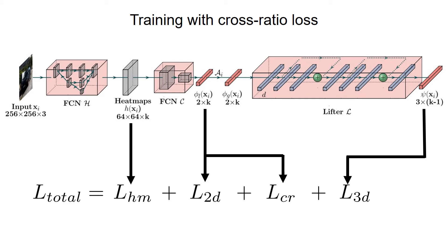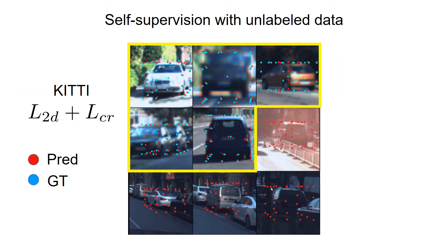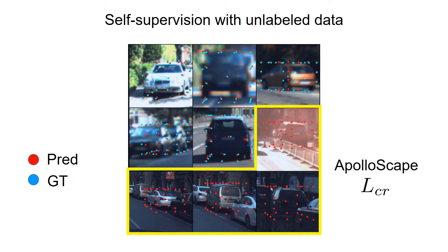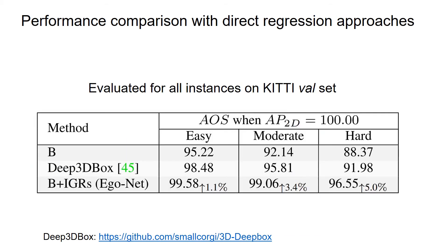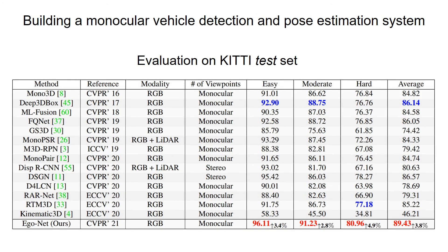Evaluating this loss function does not need any label and is agnostic to camera parameters. We not only use labeled data to learn the IGRs, but also show it's possible to use unlabeled data captured with different cameras to supervise the IGRs, which leads to better representation learning. We compare EgoNet with an open source implementation of the direct regression-based approach on the KITTI validation set, which shows our approach gives more precise predictions especially for the hard cases.